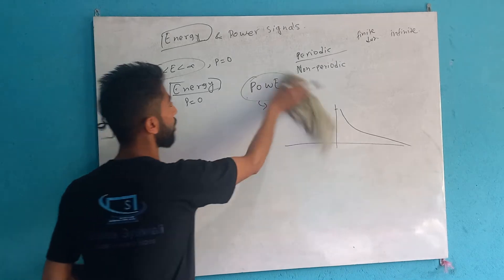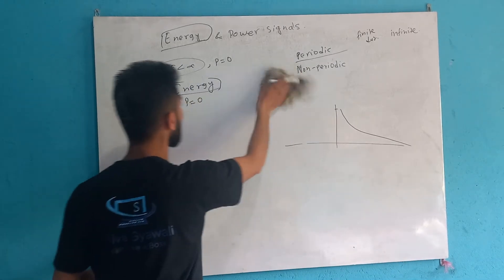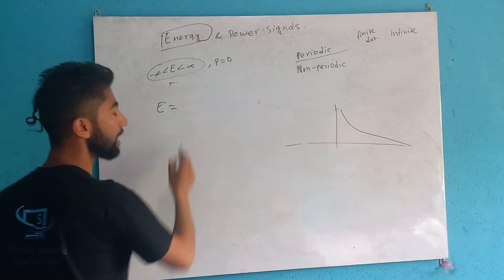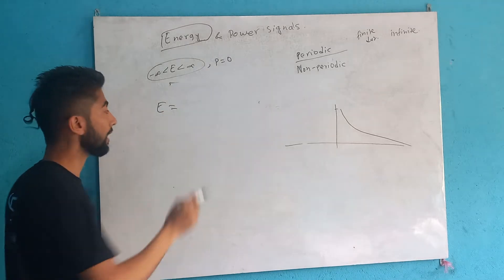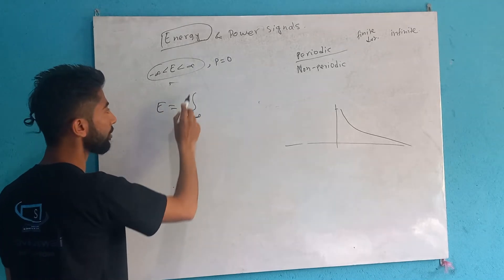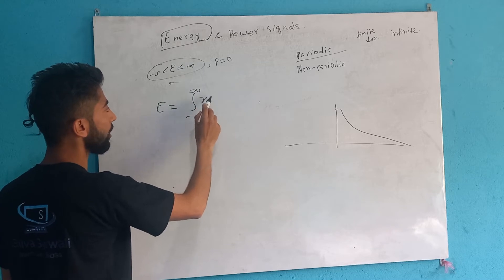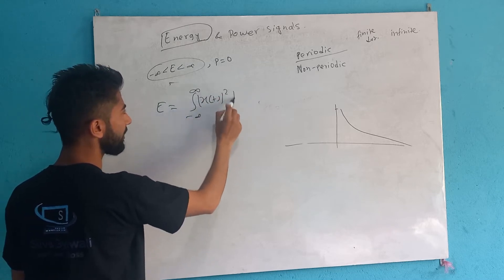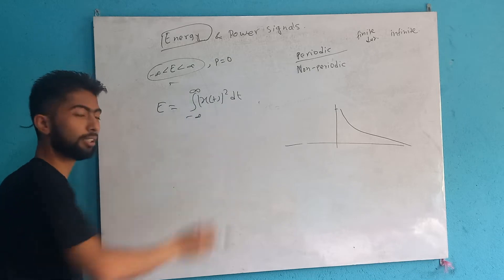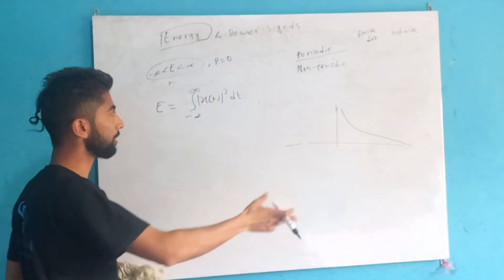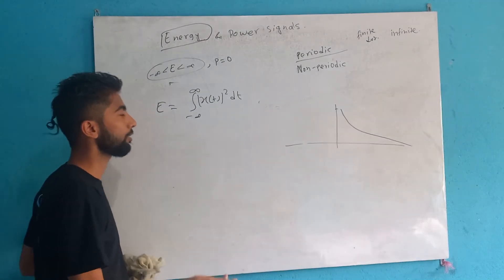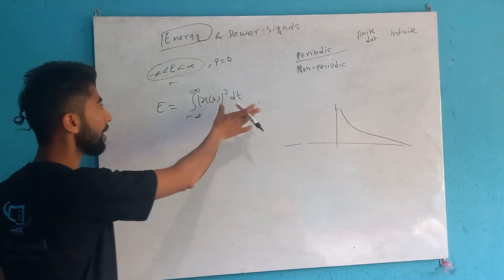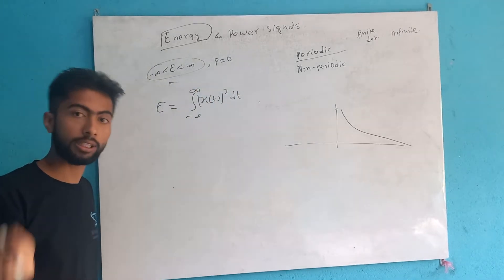Now we have a formula. For the continuous signal from minus infinity to infinity: energy equals the integral of x(t) squared dt. For a real value it is x(t) squared dt, and for a complex value it is the magnitude squared. So this is the energy of a signal.